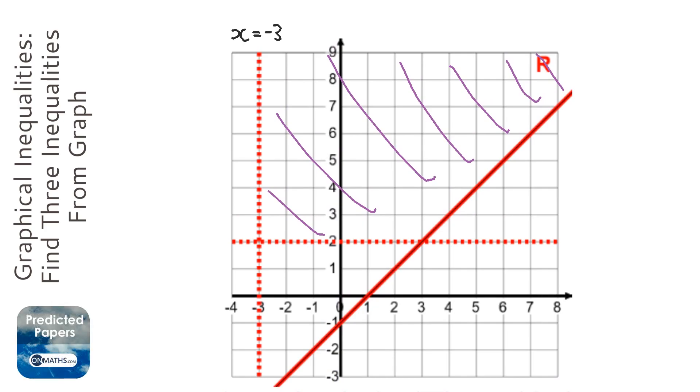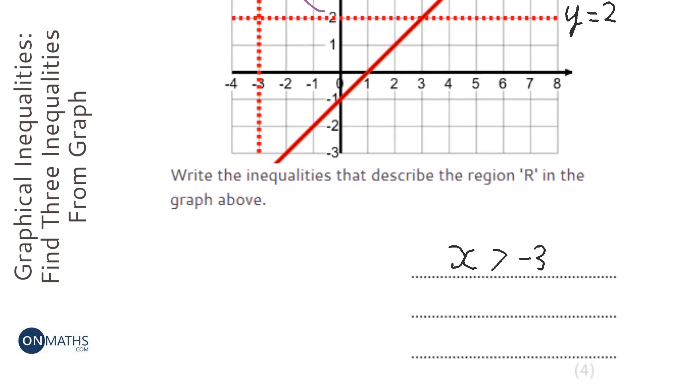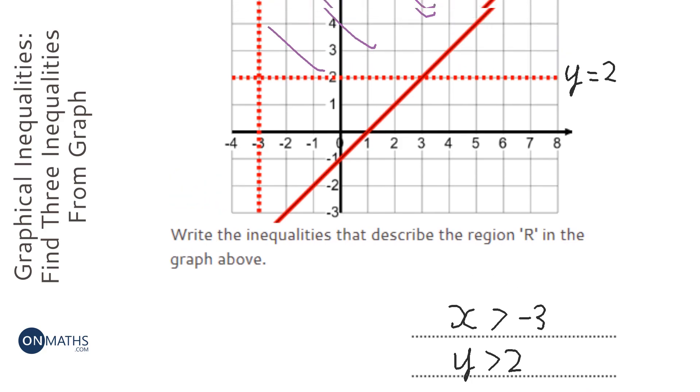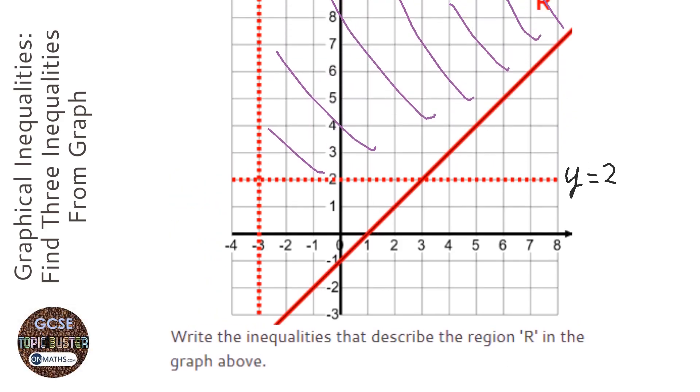So let's have a look at the next line. Well this one here is y equals 2. And you can see here that the region is always above that line. So it's y is greater than 2. And again it's dashed so it can't equal that line.